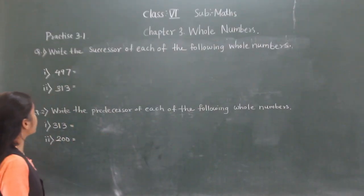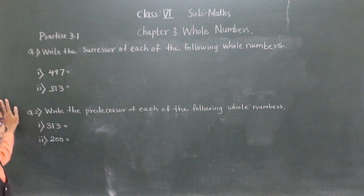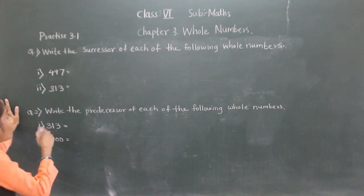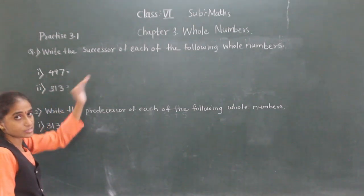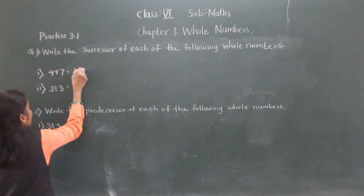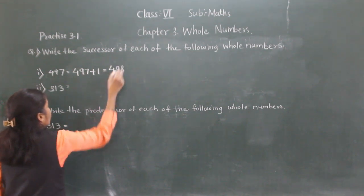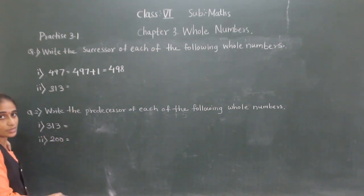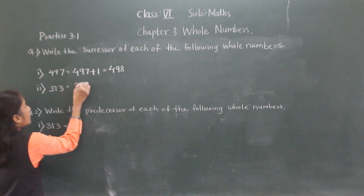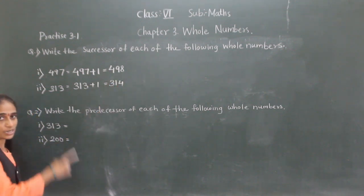Let's go to Practice 3.1, question number 1: write the successor of each of the following whole numbers. The successor means add 1 to the given number, or we can say the number that comes after the given number. For 497, the successor is 498 (497 + 1 = 498). For 340, the successor is 341.